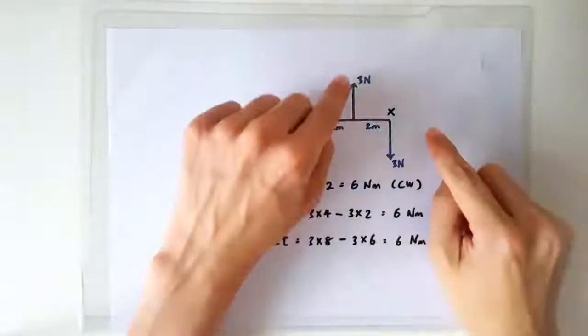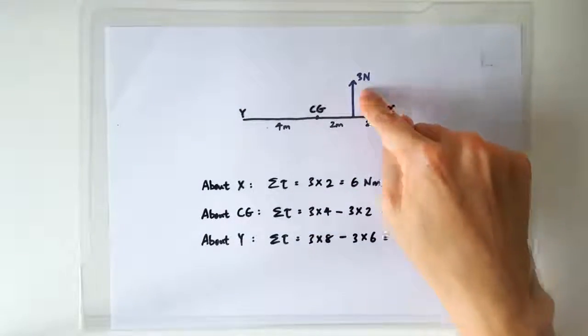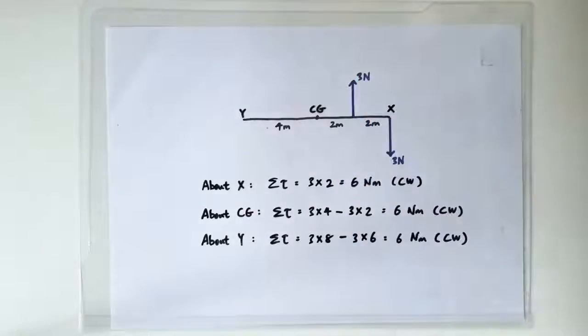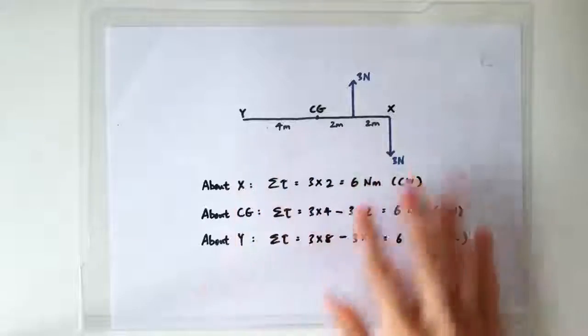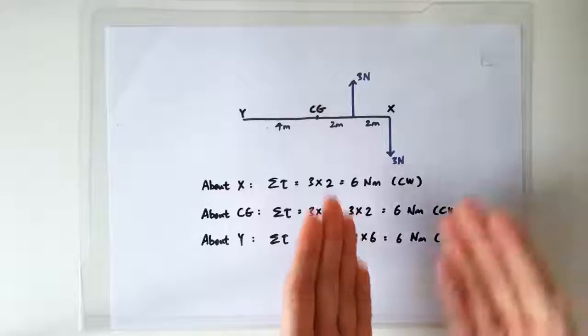So coming back to the example we started out with, do you notice that net force is 0? 3 newtons one way and 3 newtons the other way. So if net force is 0, you can calculate the total moment about any point you want. Mathematically, you'll arrive at the same outcome.